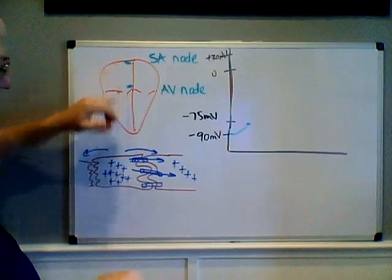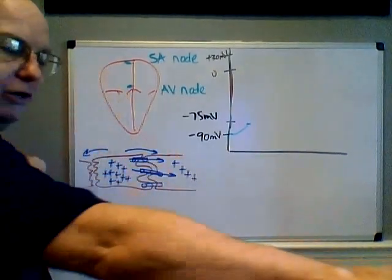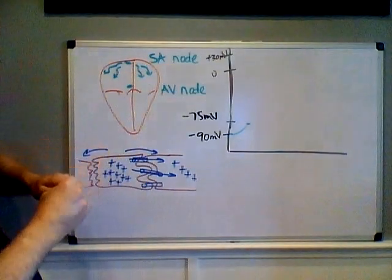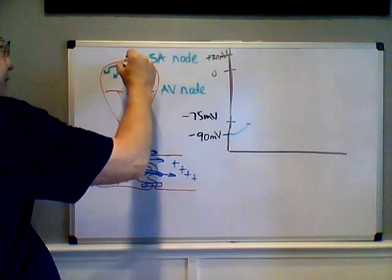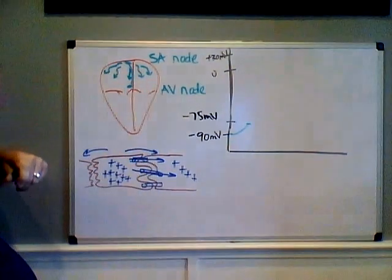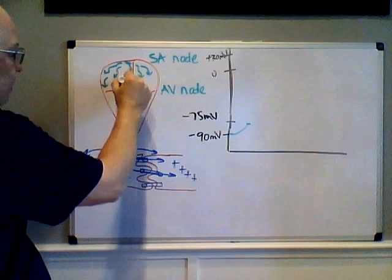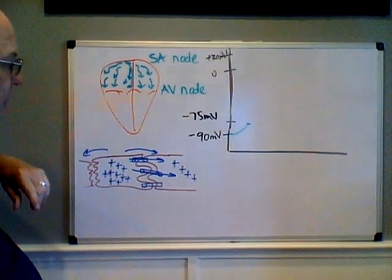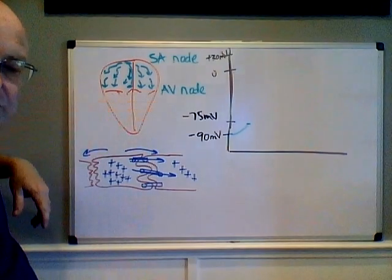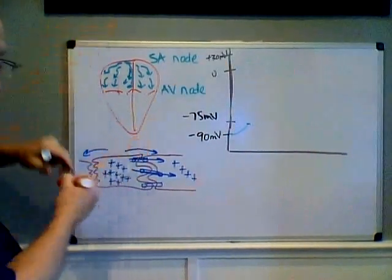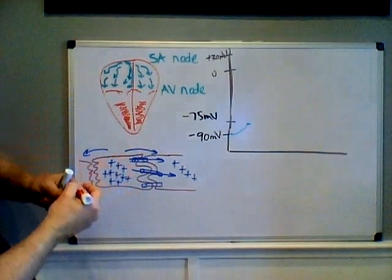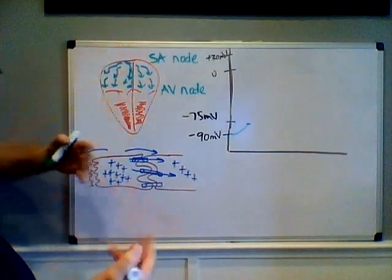Once the first cardiocyte in the SA node depolarizes, the action potential spreads through all the others. We can see it literally spreading out from the SA node throughout the atria, and the atria begin to contract. At the same time, a line of cells called the internodal pathway connects to the AV node, and the voltage spreads through it simultaneously. As the action potential spreads through the atria and they contract, they top off the ventricles. About 70% of ventricular filling occurs due to gravity while all four chambers are relaxed, and atrial contraction brings the ventricles to approximately 100% full.